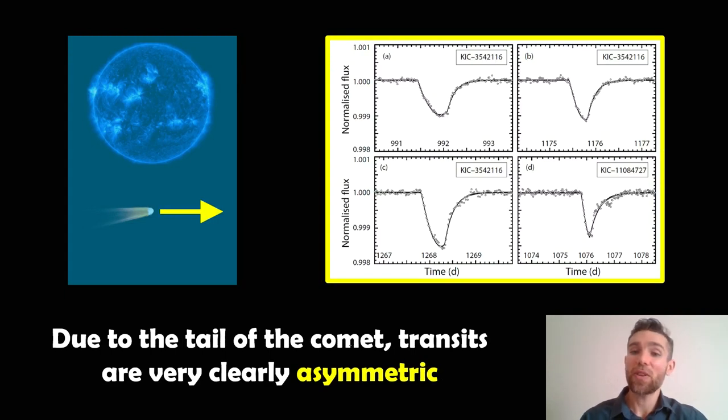Now if you've got a comet, it's no longer symmetric. It becomes asymmetric instead. So we've got this comet with a nucleus and then a long extended tail behind it. When that passes in front of a star instead, we get these unusual looking asymmetric or skewed transits. So it's clearly very asymmetric now.